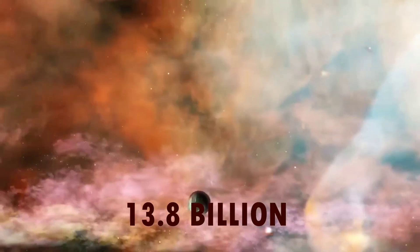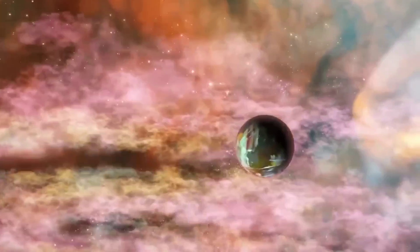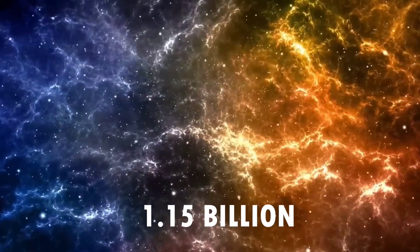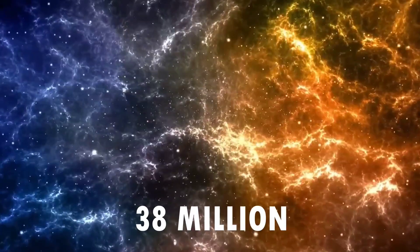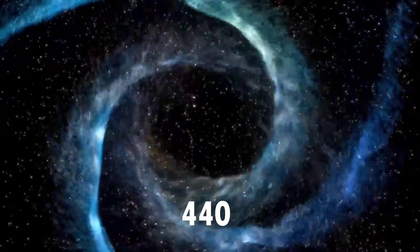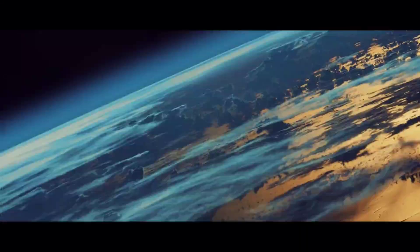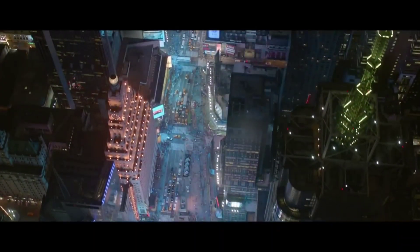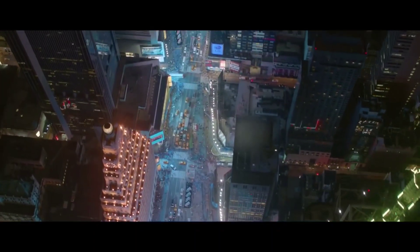The Cosmic Calendar compresses the 13.8 billion years of the Universe into a single year, with each month representing about 1.15 billion years, each day about 38 million years, and each second about 440 years. On this scale, the Anthropocene would last less than a second, and the entire human history would be a fraction of a second.